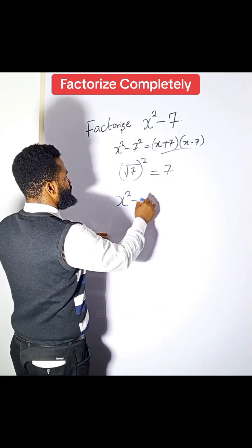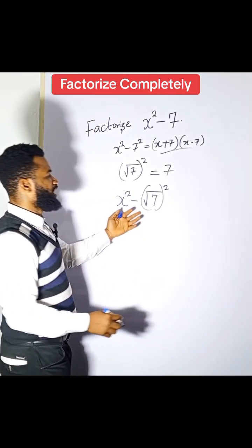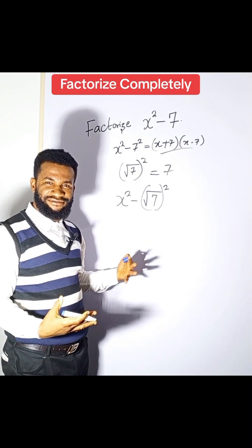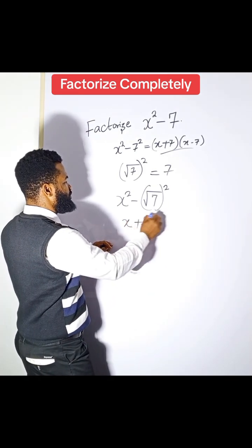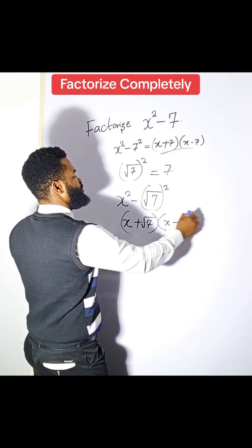Now at this point I have difference of two squares. I can now factorize. So this is going to be x plus √7 and then x minus √7.